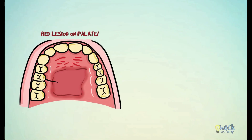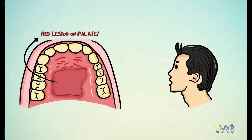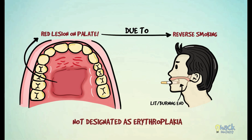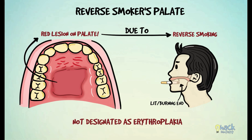There are red lesions that may occur on the palate in individuals who have a habit of reverse smoking — that is, the tobacco product is smoked with the burning end of the cigarette inside the oral cavity. This form of smoking is called reverse smoking, and any red palatal change occurring as a result is not designated as Erythroplakia, but is called a reverse smoker's palate. These lesions are in fact classified as potentially malignant disorders.